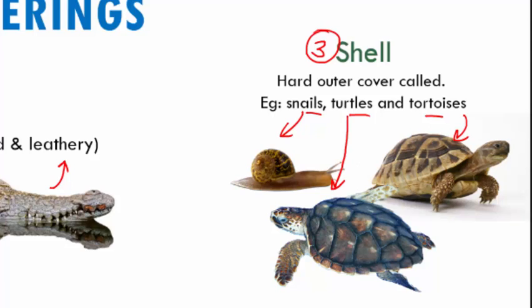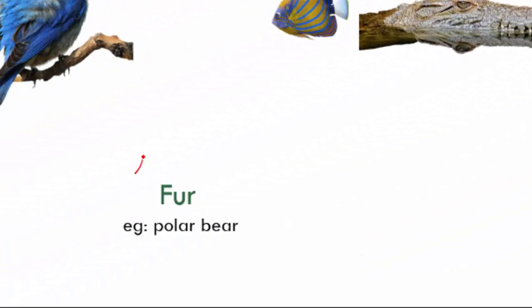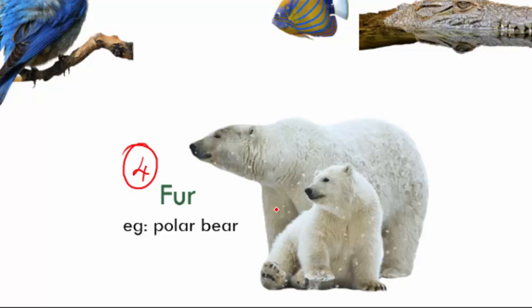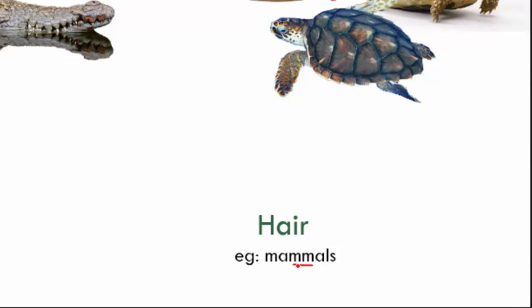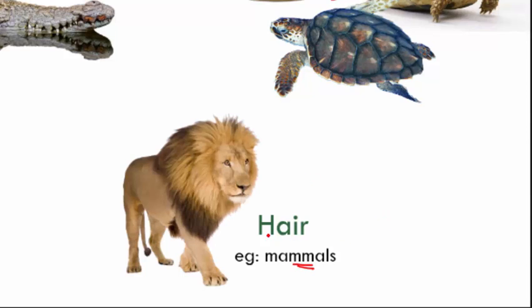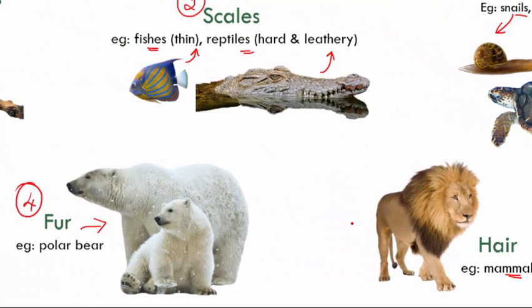The next one is fur. Which is the animal that has fur? It is polar bear. So polar bear has fur. You can see it is very thickly covered fur. Fur is nothing but hair, which all mammals have. For example, a lion. You can see how majestic the mane on the lion looks, right? So that is nothing but hair. Now in mammals, apart from hair, some of them are categorized as fur. For that, the example would be the polar bear.